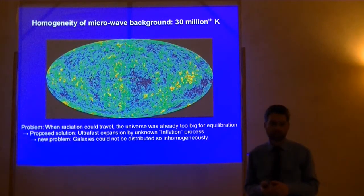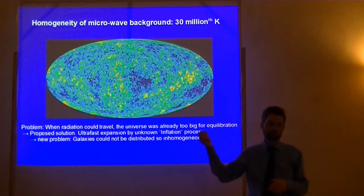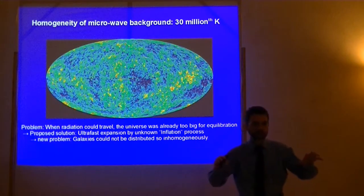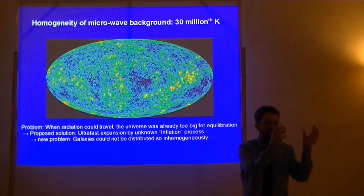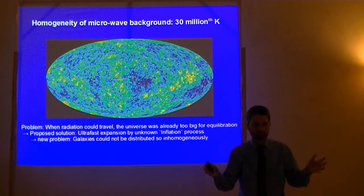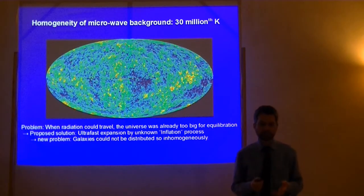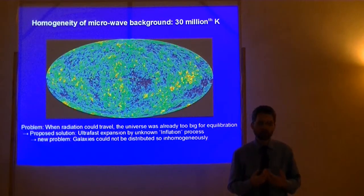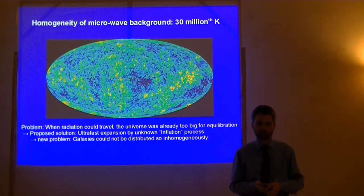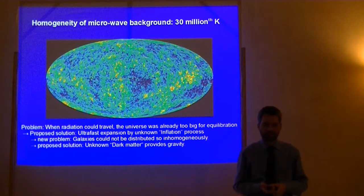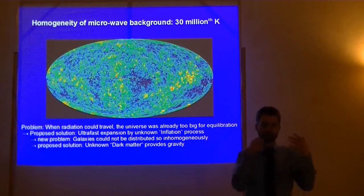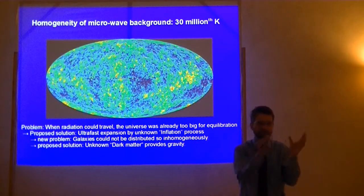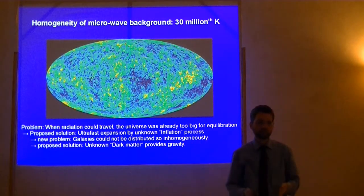Because of these observations. But there is a new problem. If that is true that everything is so homogeneous, how could it be that the galaxies are distributed so structured, in such a structured manner? They are ordered in clusters and super clusters. And this is impossible if this background picture, which is an image of the early universe energy distribution, is so homogeneous. How can we solve this if we don't want to give up the Big Bang theory. We introduce dark matter. Again.